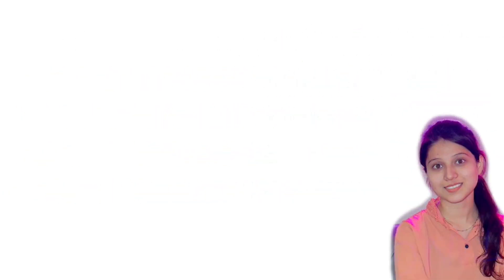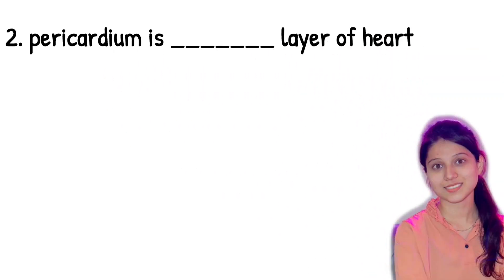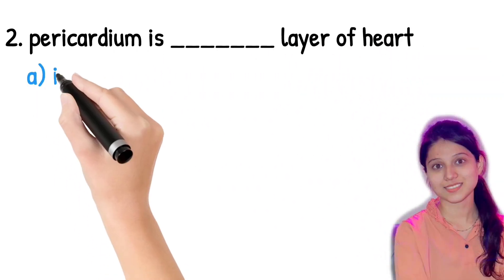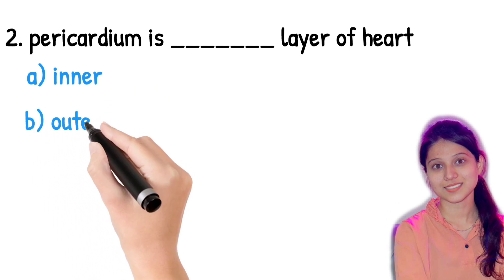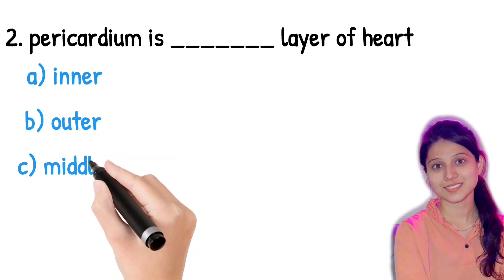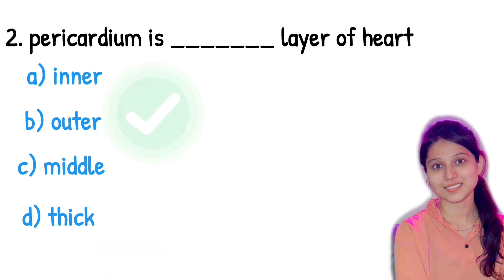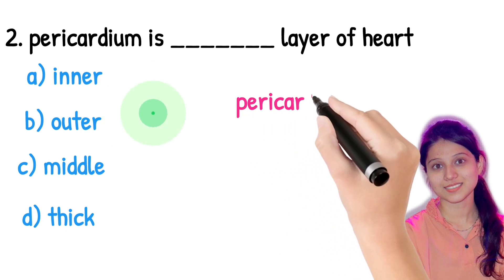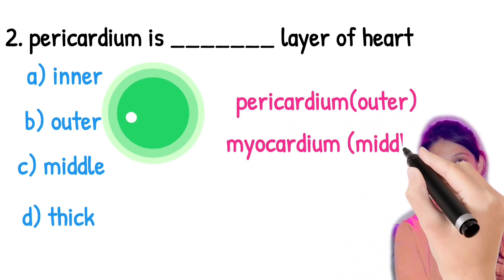Next question: pericardium is the dash layer of the heart. Option one: inner layer, option two: outer layer, option three: middle layer, option four: thick layer. The right answer is pericardium is the outer layer of the heart. Always remember — pericardium is the outer layer, myocardium is the middle layer, and endocardium is the inner layer.